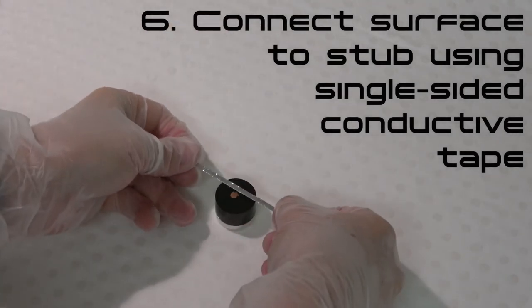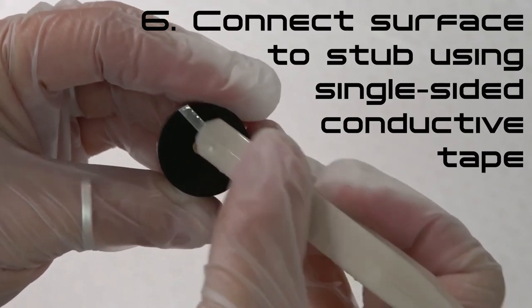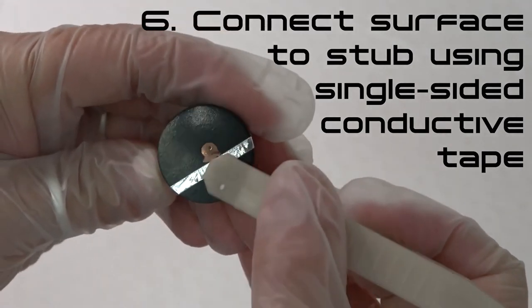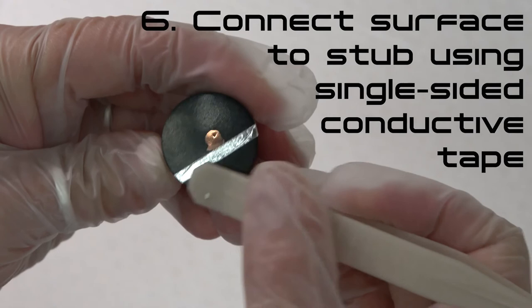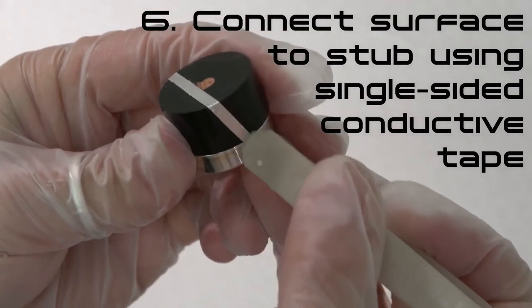Step 6: For resin-mounted samples, connect the sample surface with the SEM stub using single-sided conductive tape. Ensure that the tape makes good contact with the surface, including at the edges. Do not place tape on or near an area of the sample that you wish to examine.